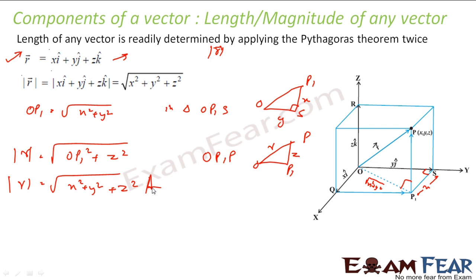OP1 squared is x squared plus y squared, so magnitude of r is root of x squared plus y squared plus z squared. Please remember: for any vector r written as xi + yj + zk, the magnitude is root of x squared plus y squared plus z squared.